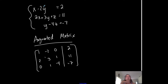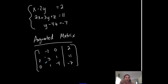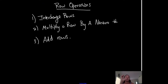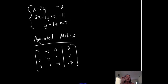So you want to know how to go in between converting from a system into matrix form, and vice versa, from matrix form into system form. And then playing with the matrix such that you create basically your solution to the system.